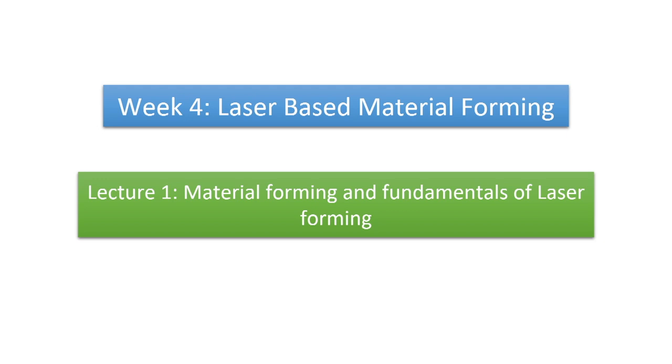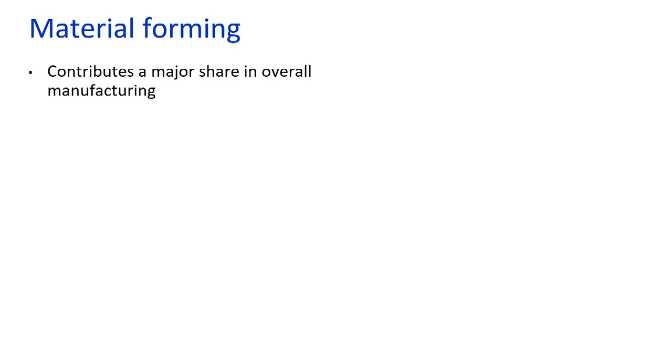At the start of the lecture we will study various types of material forming and then discuss how lasers can be utilized to deform material using photon-based thermal energy. Material forming is one of the primary manufacturing processes. We know that casting is one manufacturing process widely used as a primary process to convert raw material into semi-finished product. Material forming is another process where we use raw material to again make semi-finished products.